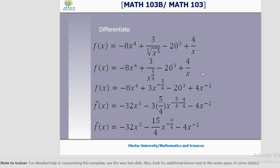Now let's do this example in class: f of x equals minus 8x power 4 plus 3 divided by the fourth root of x power 5 minus 20 cubed plus 4 by x. In the first line, do the algebra: minus 8x power 4 plus 3x power minus 5 by 4 minus 20 cubed plus 4x power minus 1. Now differentiate: for minus 8x power 4, n equals 4 so 4 comes down giving minus 32 into x power 3. For 3x power minus 5 by 4, minus 5 by 4 minus 1 gives minus 9 by 4.